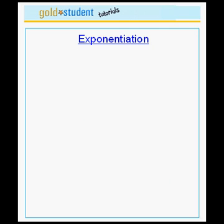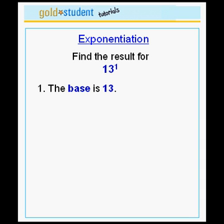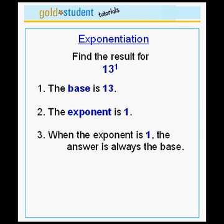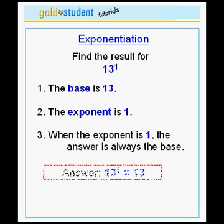Let's do another example. Let's find the result for 13 to the power 1. The base is the number 13. The exponent is 1. Because of our special rule, when the exponent is 1, the answer is always the base. Therefore, 13 to the power 1 is equal to 13.